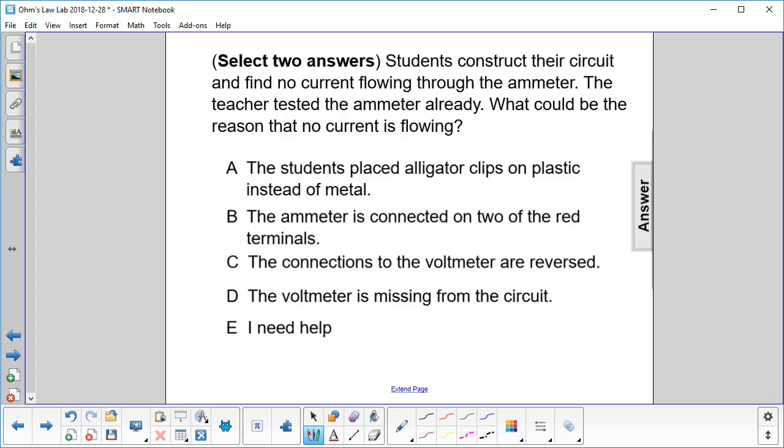The students placed alligator clips on plastic instead of metal. Absolutely. You can't have current flowing into the ammeter if you don't have a complete path and that has to be metal to metal, a conducting path.